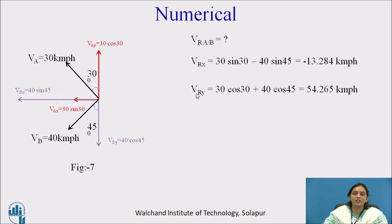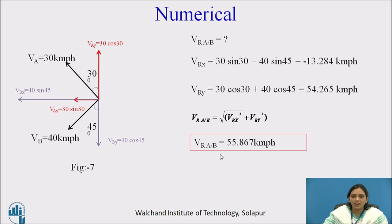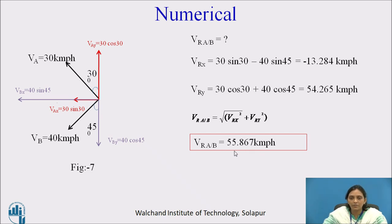Now calculate the relative velocity component in the y direction. In the y direction, there are two velocities: 30 cos 30 and 40 cos 45. They are in exactly opposite directions, so we do the addition of these two velocities, giving VRy = 54.265 kilometers per hour. Now, put VRx and VRy into the formula: relative velocity = square root of VRx squared plus VRy squared, similar to the resultant formula. The relative velocity of A with respect to B is 55.867 kilometers per hour.